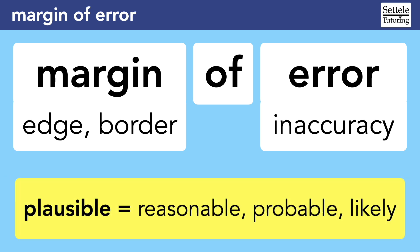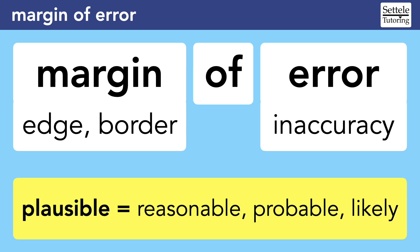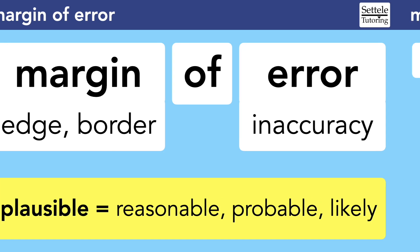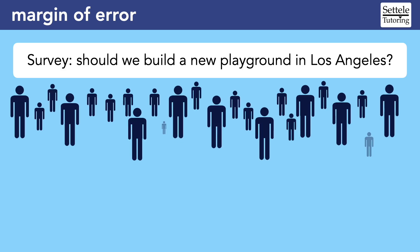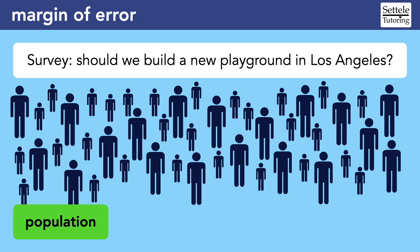You should also know the definition of the word plausible, which is very common in margin of error questions. Let's say we wanted to know if people supported building a new playground in Los Angeles. We could try asking everyone what they think, but that would be nearly impossible because there are so many people who live in Los Angeles.